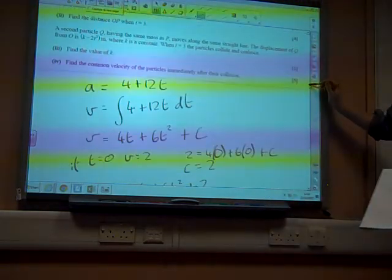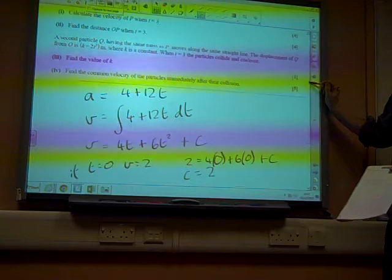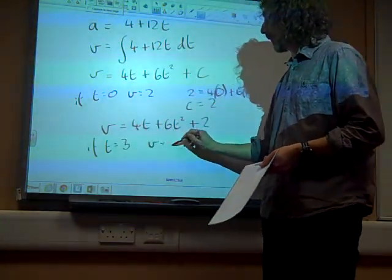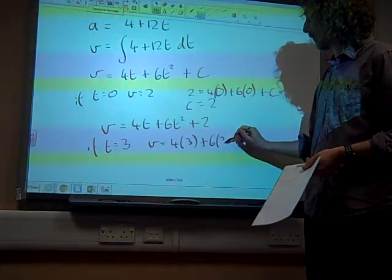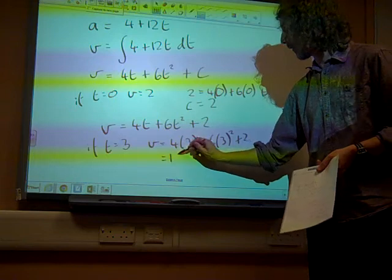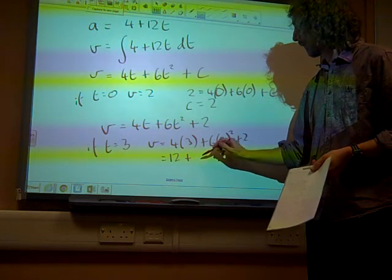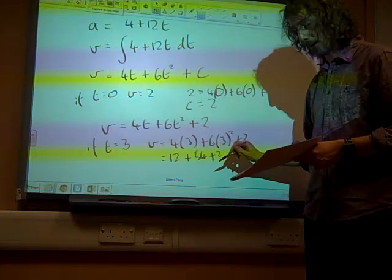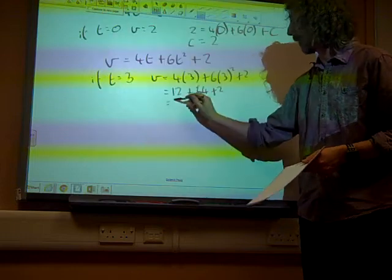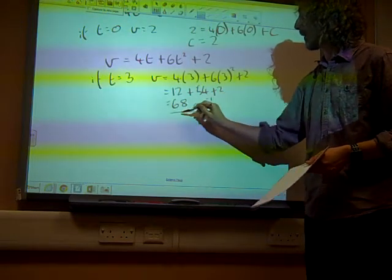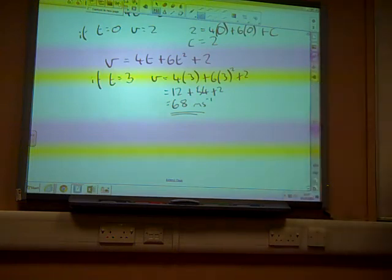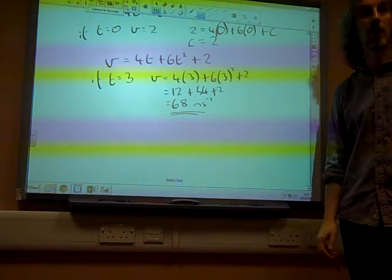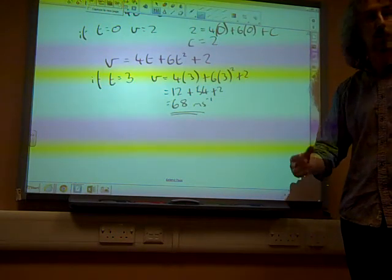So the velocity is given by this equation. Now what was the question wanting? Find the velocity of P when t is 3. So if t equals 3, v is 4 times 3 plus 6 times 3 squared plus 2, so 12 plus some other amount, 54 plus 2. Is that right? I get 68. I do get 68. 68 meters per second. Notice that the c is really important because if you've got c missing then you get 66, and that was the most common wrong answer.